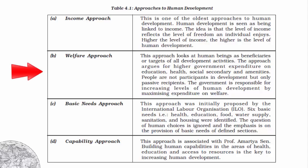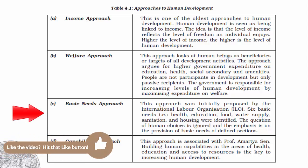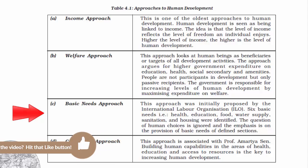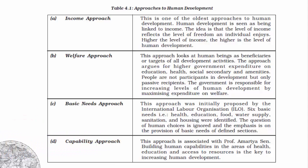The second one is the welfare approach — this says if the government spends more on the people, they will benefit more. But in this approach, people are seen as receivers and not givers, meaning the government will have to spend a lot. The third one is the basic needs approach — forget about human choices; we focus on basic needs which are health, education, food, water supply, sanitation, and housing, because people for most of their life are busy dealing with these basic needs.